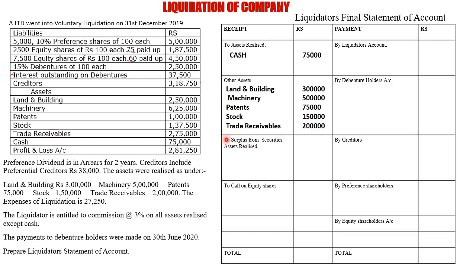We check the next item — surplus from securities — meaning any asset realized against any liability. Such assets are not given in this question, so the amount remains nil. Call on equity shares we will see later. These are all things on the receipt side; now we jump to the payment side.